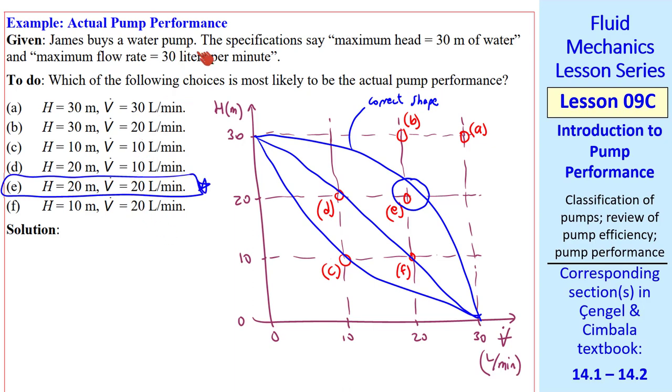The point of this exercise is to show you that you need to be aware of these specifications. Pump manufacturers like to quote their maximum head and their maximum flow rate, but you can't get both at the same time. When you have maximum flow rate, you have zero head, which is useless. When you have maximum head, you have zero flow rate, which is also useless.